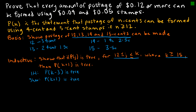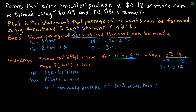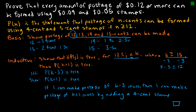You might be asking why I chose p(k−3). Well, if I took three away from each of these I would get k minus three is greater than or equal to 12, and I've already shown it for 12 — so I'm really taking it back down to that starting point. I'm just going to assume that p(k−3) is true, and so if I can make postage of k minus three cents, then I can make postage of k plus one cents by adding a four-cent stamp. And therefore I have proved my inductive step.